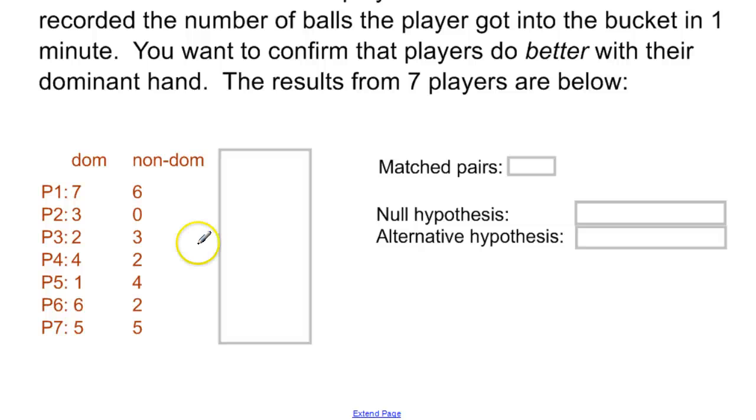Down below, we have the actual raw data from seven of these players. Now, what's interesting about this data here is that for every dominant, there's a non-dominant. For every non-dominant, there's a dominant. That does not necessarily mean that we have matched pairs though.